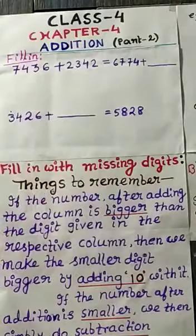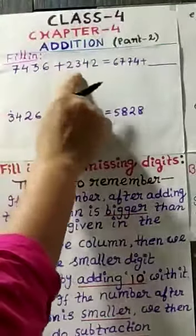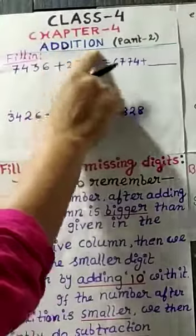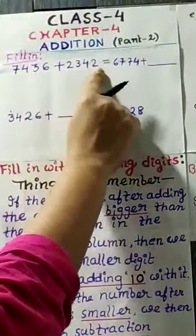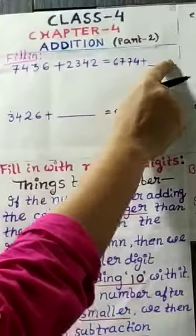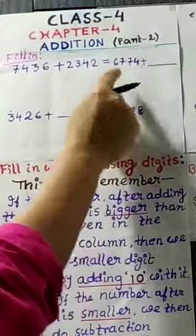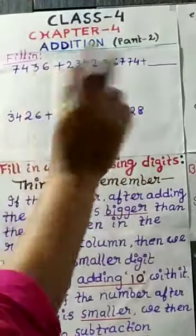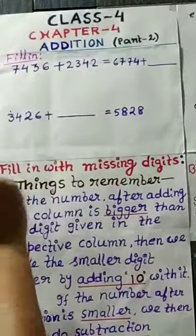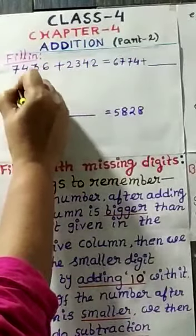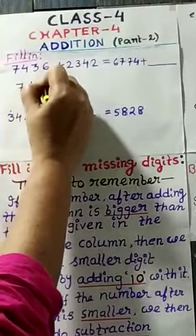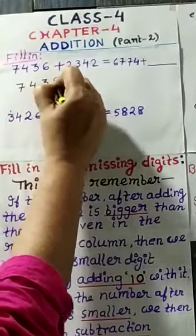First one is filling. Two numbers are given. Sum of these two numbers is equal to sum of these two numbers. But here you can see one number is given. We will have to find out the other number. But how will you find out the other number? Here we will do the addition of these two numbers.